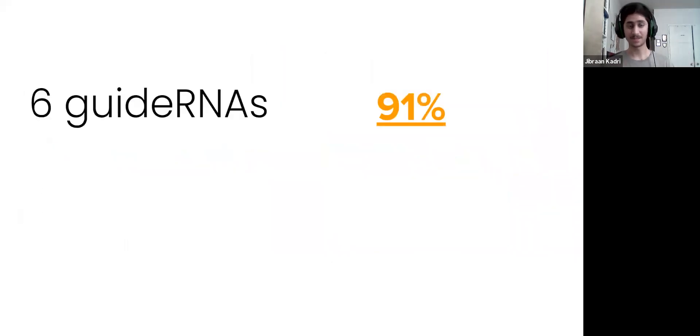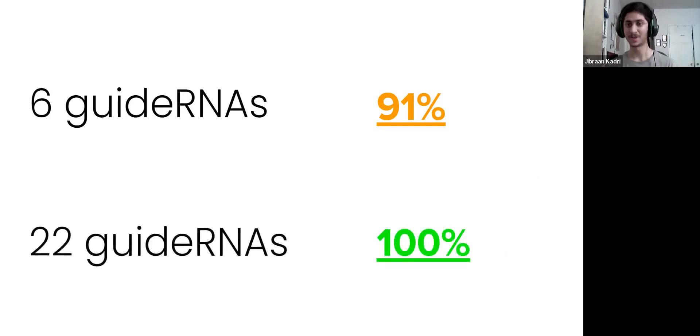Now, scientists found that with just six guide RNAs, we can target 91% of all coronaviruses. And it gets better. With 22 guide RNAs, we can target 100% of coronaviruses.